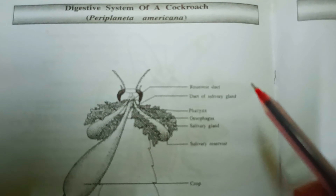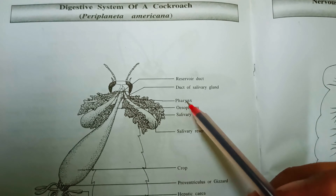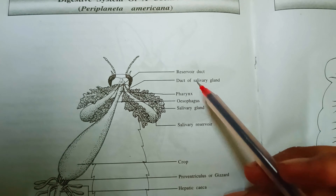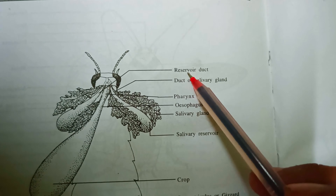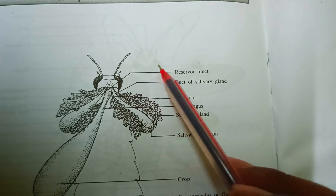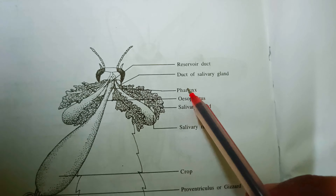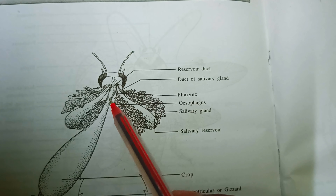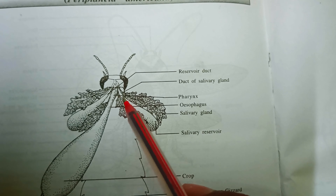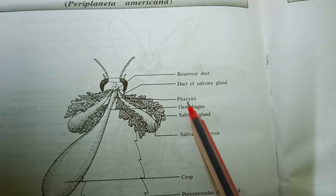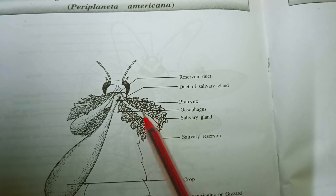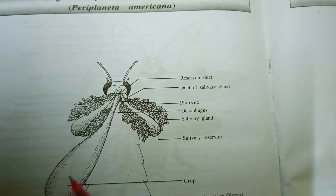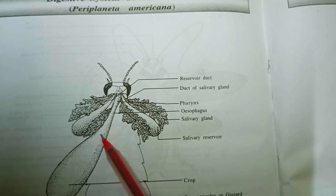The digestive system of a cockroach consists of the following parts. The first part is actually the reservoir duct. The second part is actually the duct of salivary gland. And then pharynx comes. This is the pharynx, and then esophagus. This big part is actually the esophagus.